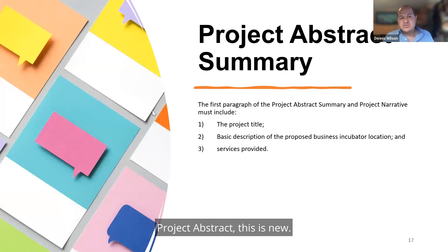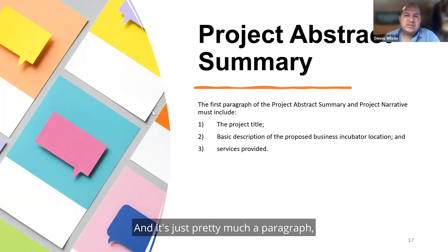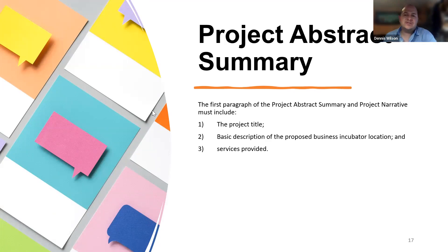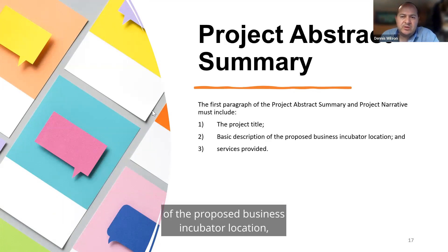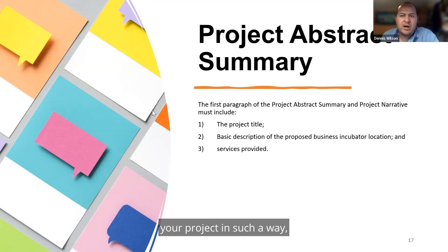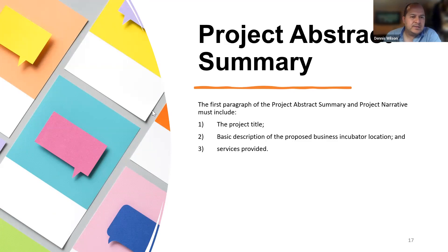The project abstract is new — it's a grant solutions output and is essentially a paragraph. You can fill it out online. It should include the project title and a basic description of the proposed business incubator location and services provided — anything that will identify your project or serve as a base summary.